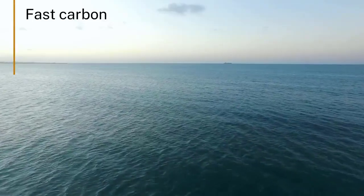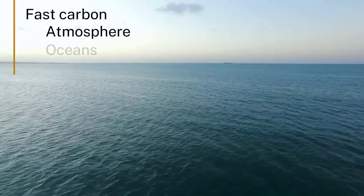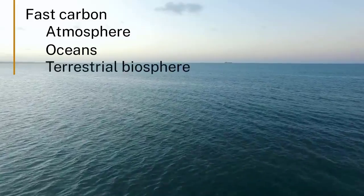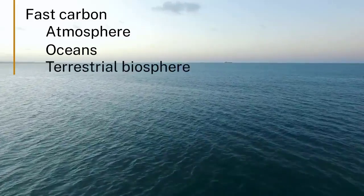There are two aspects to the carbon cycle. There's fast carbon, so that's carbon that moves between reservoirs at a rapid pace, and there's slow carbon. Fast carbon describes processes by which carbon moves between reservoirs such as the atmosphere, the oceans and the terrestrial biosphere — for example, diffusion of atmospheric carbon into the oceans and degassing from the oceans into the atmosphere.